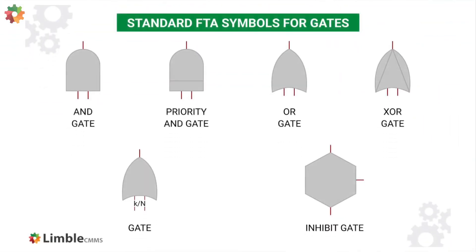Gates represent how failures propagate through the analyzed system. Sometimes a single event can culminate in a top level event like a catastrophic failure; other times, a combination of two or more different events can cause a top event. Logic gates indicate how events combine to propagate failure. Each gate will have only one output event and can have one or more input events. The most used gate is the AND gate, which can have any number of input events — the output event will occur only if all input events happen. The AND gate has a rounded top out of which comes the output, as shown in the image.